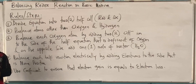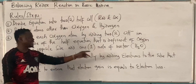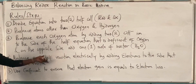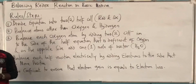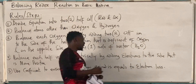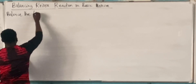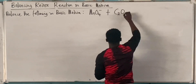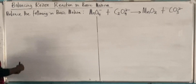Step four is similar to what we did previously: balance each half reaction electrically by adding electrons to the side that is more positive. Step five says use coefficients to ensure that electron gain equals electron loss. So let's look at the example.